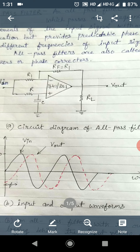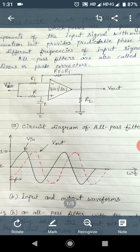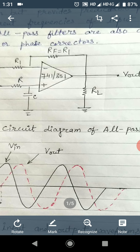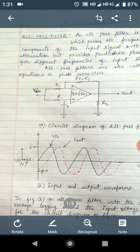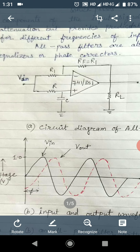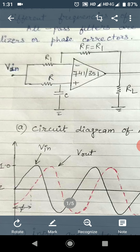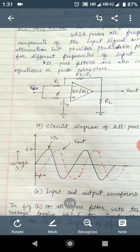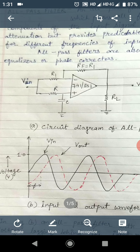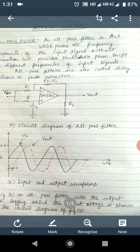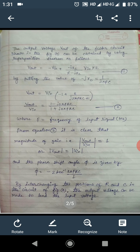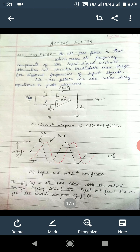The same circuit can be modified for a leading output by replacing the positions of R and C. If we interchange R and C, we get the circuit where the output voltage is leading the input voltage by some phase difference phi. So by interchanging R and C we can get the different circuit. This is all about the all pass filter.